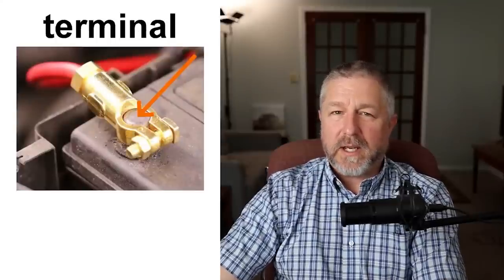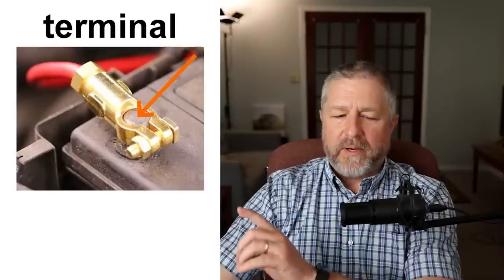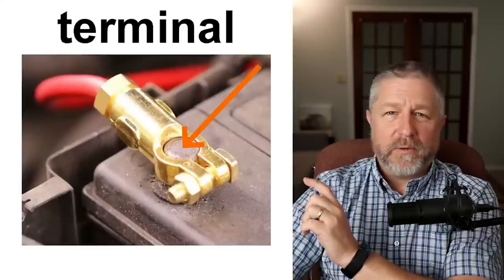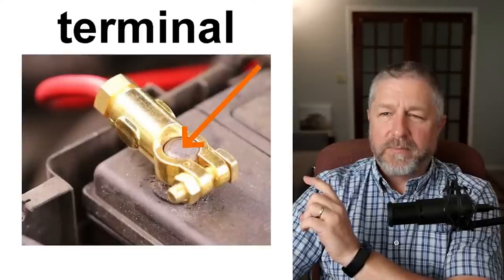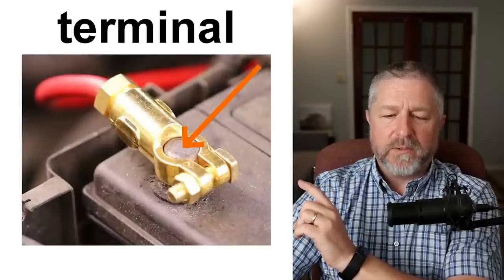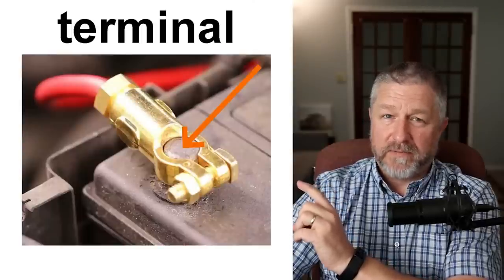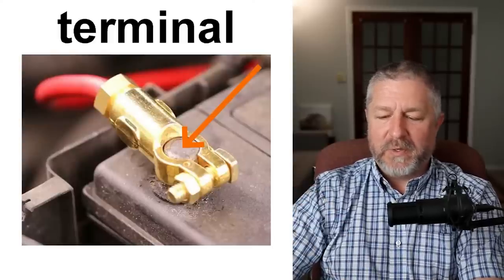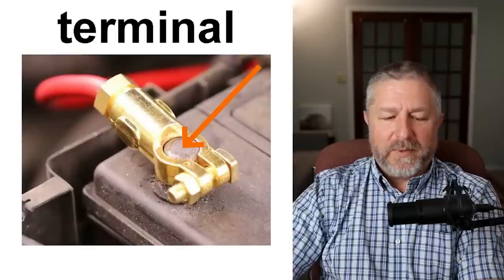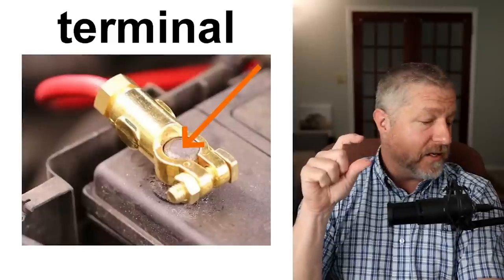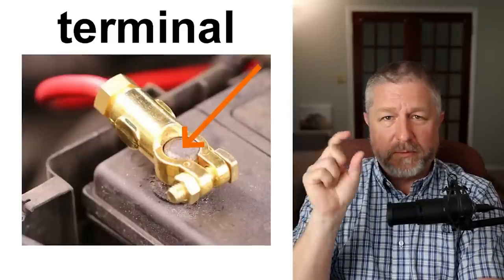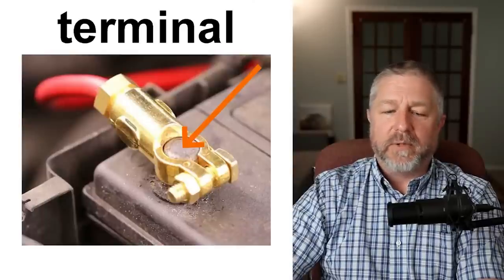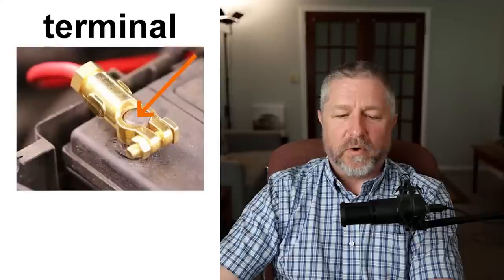This is a battery terminal. The gold part here is the connector, but where the arrow is pointing is called the terminal — we sometimes call it a battery post as well, but mostly we call it a terminal. There's a positive terminal and a negative terminal. This one is the positive terminal because it has the red wire going to it. Any kind of battery will have terminals, and in a car we generally call it a battery terminal or battery post.